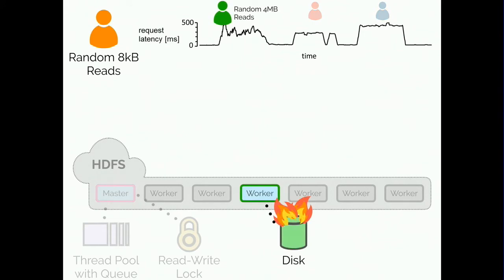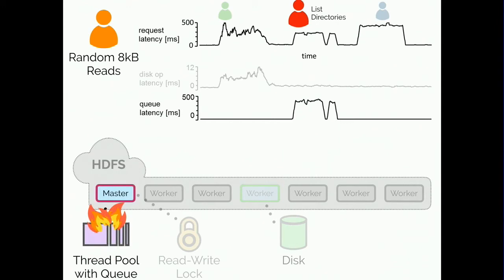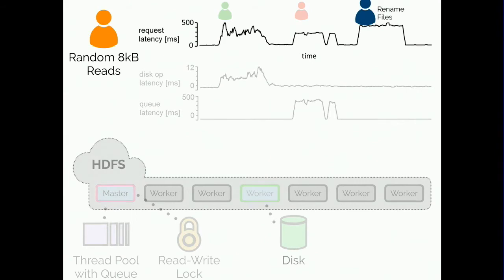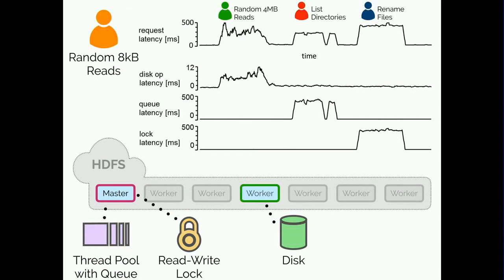The first aggressive workload makes random 4MB reads from HDFS, congesting the disks on the worker nodes. Increased disk operation latency causes the elevated end-to-end latency. The second workload repeatedly lists file system directories, congesting the master's thread pool, increasing queuing time, and again impacting end-to-end latency. The third workload has a tenant repeatedly renaming files, congesting the master's read-write lock — because renaming requires an exclusive write lock to update the metadata. This experiment demonstrates how different workloads can interfere in different ways. Different resources become bottlenecks, including both application-level and hardware resources, and bottlenecks can appear anywhere on the end-to-end execution path.